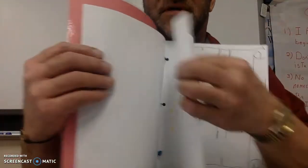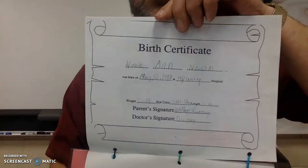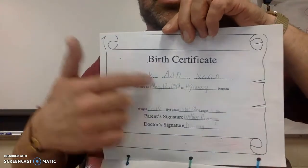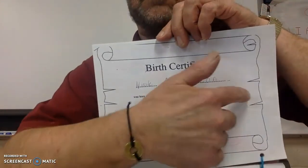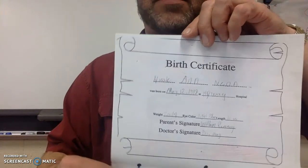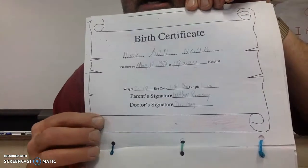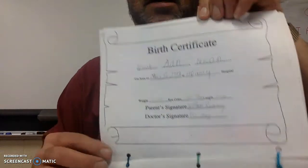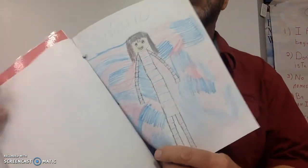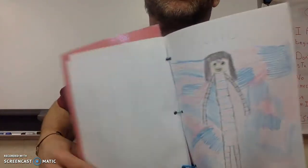The next page is the birth certificate, and you could make your own if you really want to. This person should have shaded — put some color here. Each of these pages should have color. She did a little sheet in here with color. Here's another page.